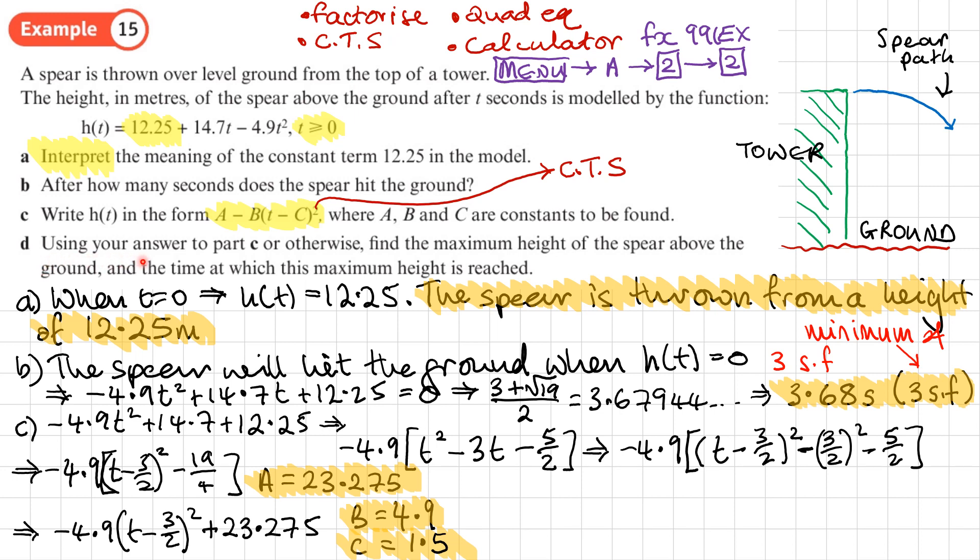And the last part of this question: using your answer to part C or otherwise, find the maximum height of the spear above the ground and the time at which this maximum height is reached. So this is using our completed the square form and working out what's going on. Now since it's talking about a maximum height, I think that the path of my spear is actually going to be something like this - going up and then coming down like this - and we're trying to find out what this is here, that's the max height. I've updated my drawing to what I think actually it's going to look like. Otherwise the maximum height would just be 12.5 if it was going down, but somebody's throwing the spear up and then it comes back down.